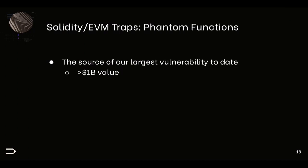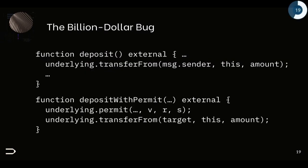That first trap was behind a vulnerability we disclosed, but the second one was behind a vulnerability that could possibly have been the largest hack ever — more than a billion dollars in value. We call these 'phantom functions,' a term we came up with. Here is the vulnerable code: we have two functions — deposit and deposit-with-permit.